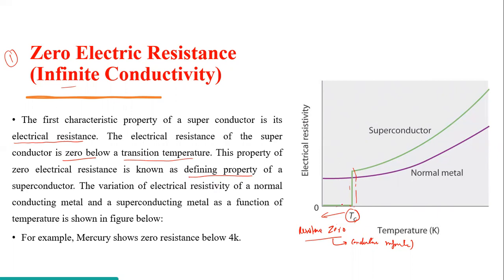This property is what categorizes a material as a superconductor. The variation of electrical resistivity as a function of temperature is shown in the figure. For a normal metal (the purple line), as temperature decreases, resistance also decreases, but even at zero Kelvin, some amount of electrical resistance remains due to the material's internal properties. For a superconducting material, resistance also decreases as temperature is lowered, but at a particular temperature it abruptly drops to zero, after which the conductivity becomes infinite.